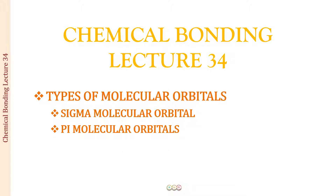You have learned something about the sigma bonds and the pi bonds while we were discussing the valence bond theory. But you have to remember that these two theories are based upon the same principles of quantum mechanics, and both of them are telling us about molecular structures. So there are going to be some differences and some similarities, and we will learn how the sigma and pi bonds according to valence bond theory relate to the sigma and pi molecular orbitals.